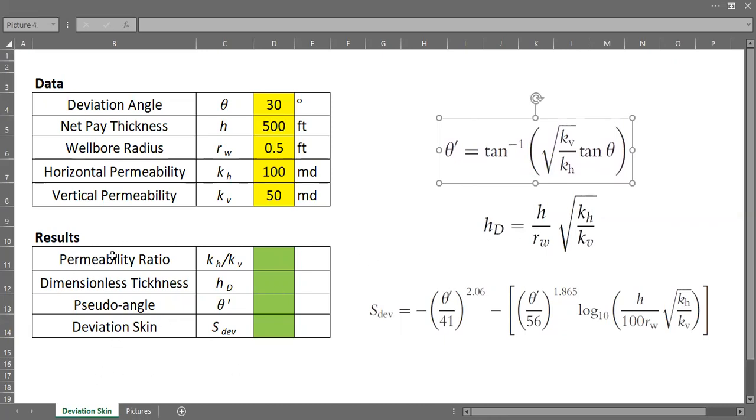So first, we need to calculate the permeability ratio. Here, I have KH divided by KV, or you can also use KV divided by KH. Doesn't matter, as long as you are consistent. So if I use KH by KV, then 100 divided by 50, it should be 2.